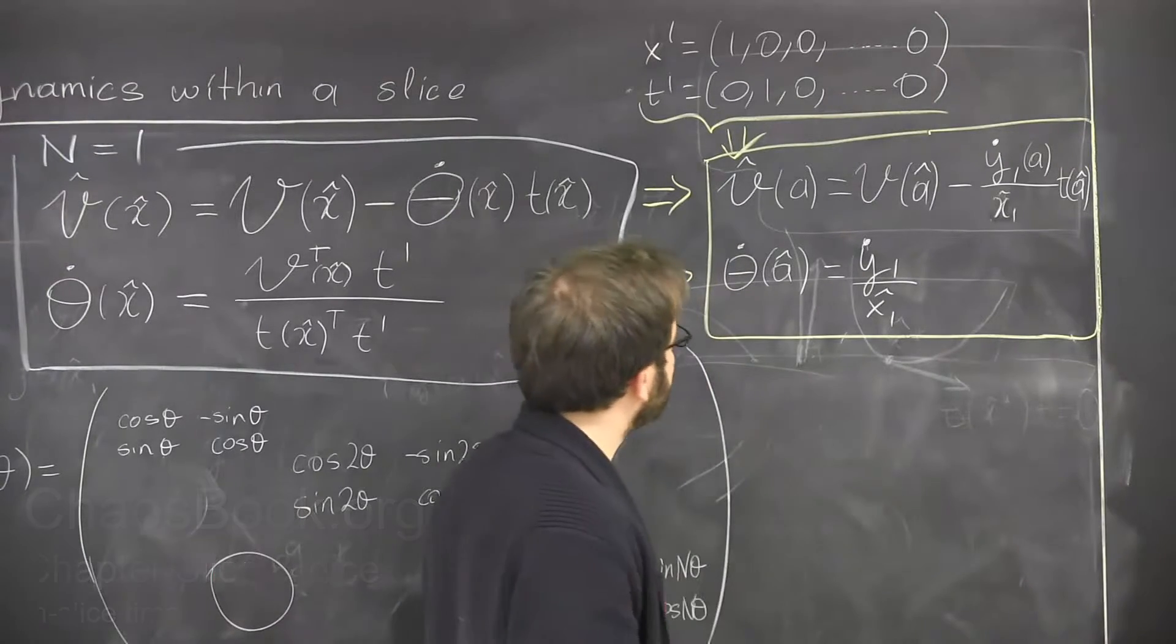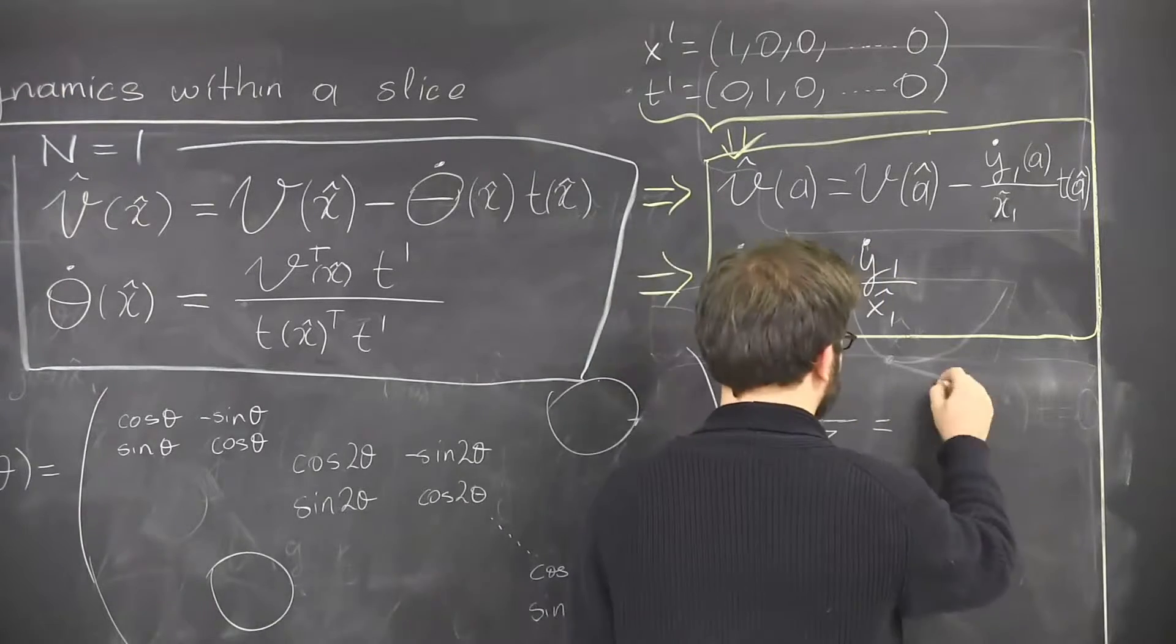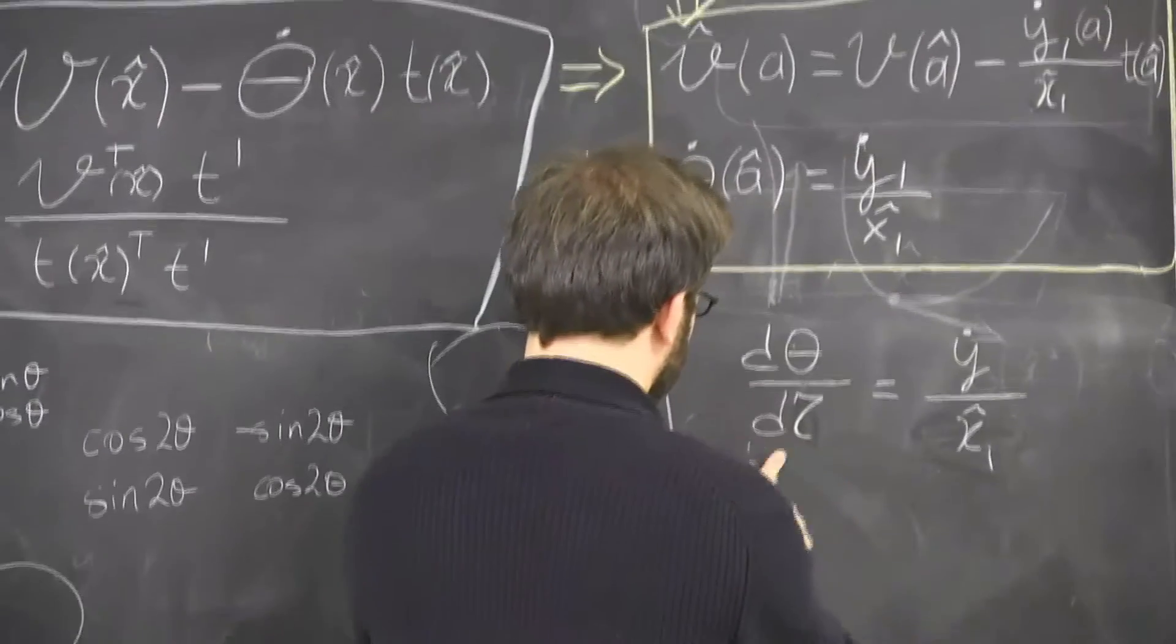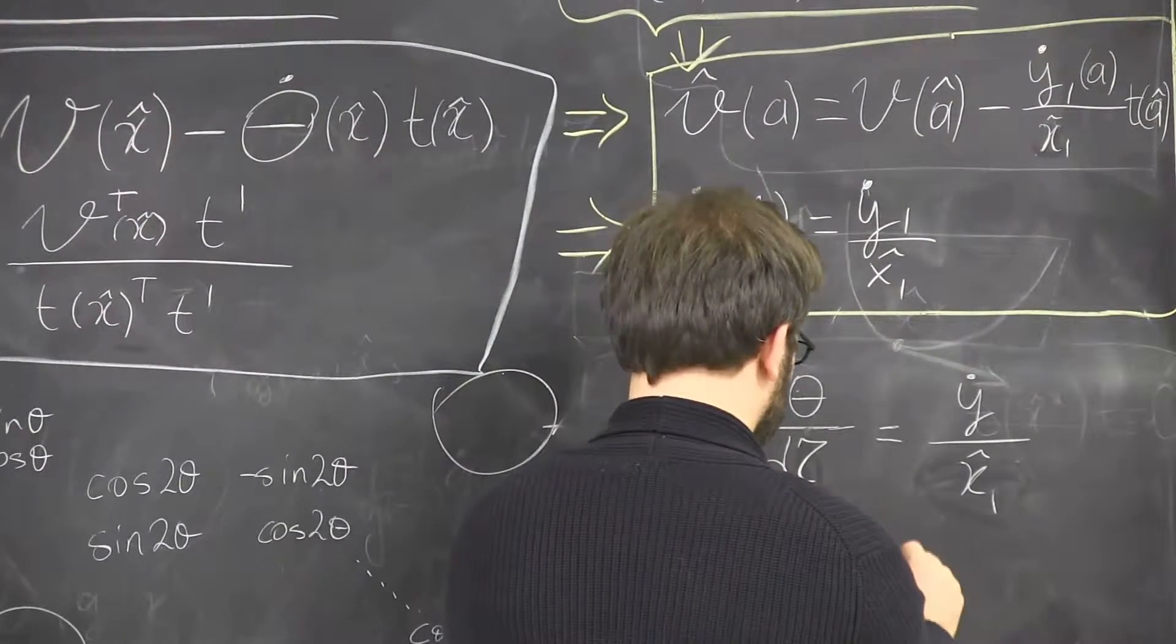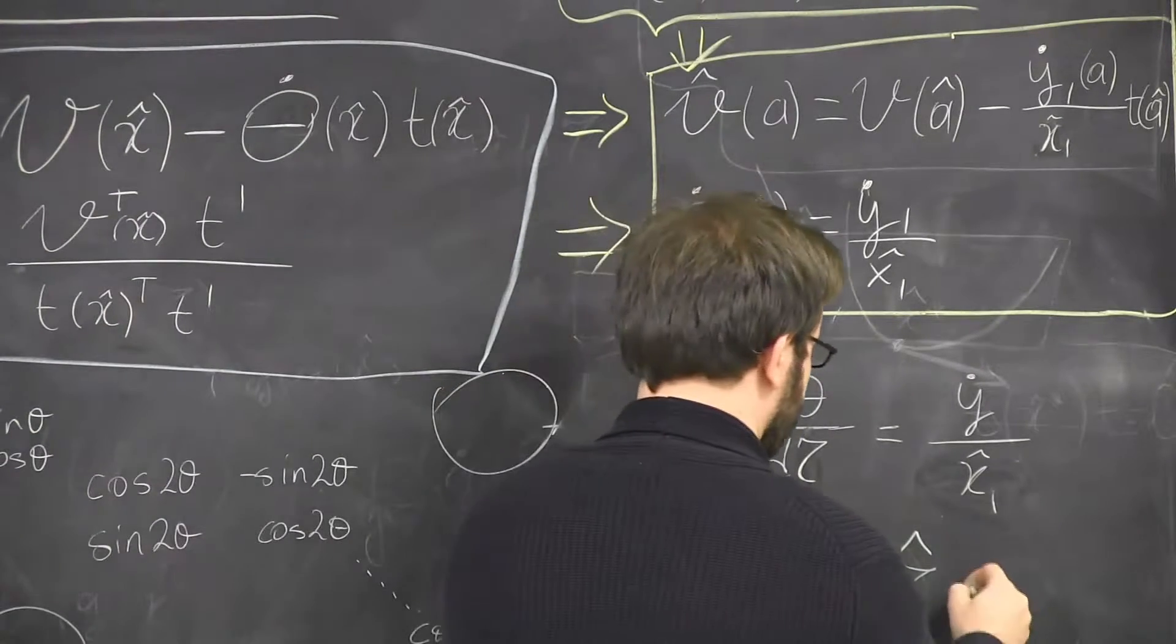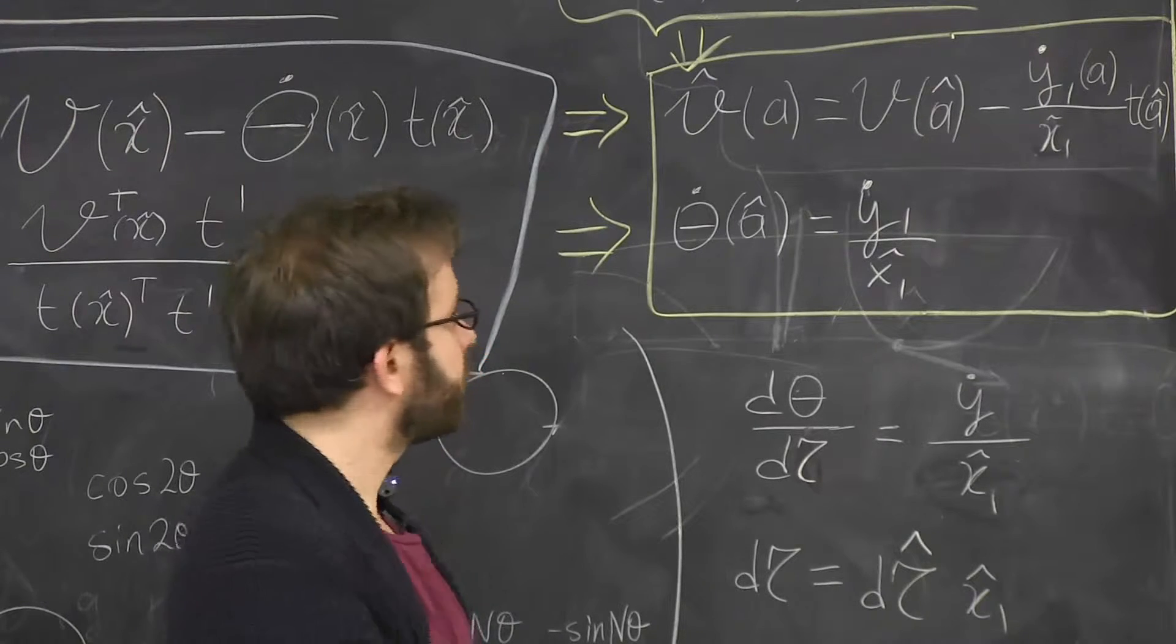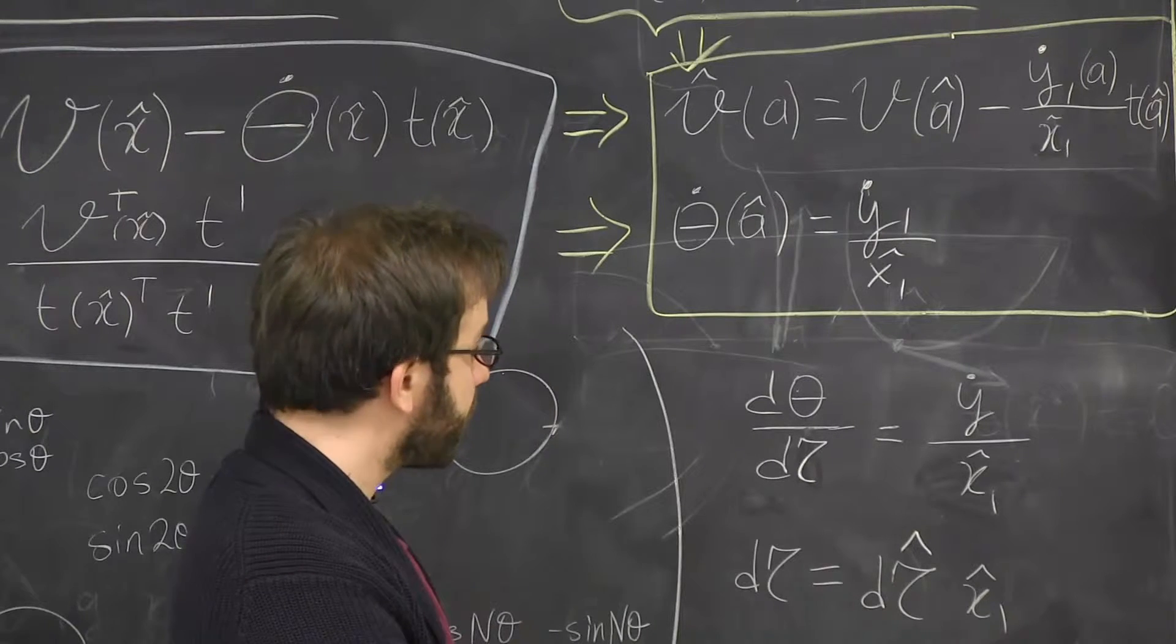I can look at this and I can say... So if I define a rescaled time such that it scales with the first Fourier mode amplitude and then solve these equations using that time.